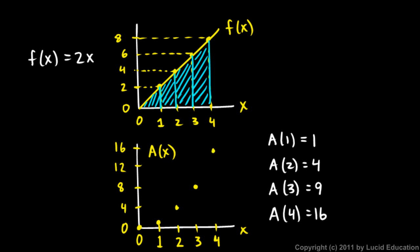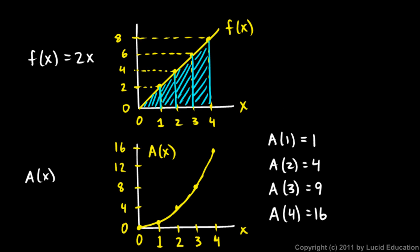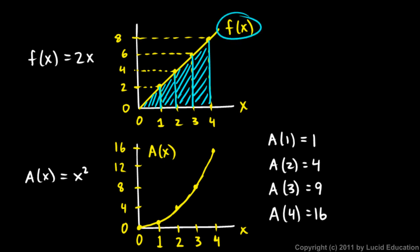Now what kind of curve do we have developing on our area graph? This is a parabola. You can see that A of x equals x squared — your standard parabola, going through (1,1), (2,4), (3,9), and (4,16). Again, note that the derivative of the area function is f of x. That means the antiderivative of our original function f is the area function — the area under that graph from 0 up to that x value.